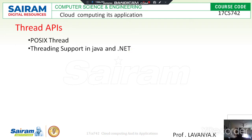Now I will move on to thread APIs. Thread APIs — application program interfaces for threads — are what we use for developing applications. The first is POSIX thread and the second is threading support in Java as well as .NET. Thread APIs are required to support multi-threading for various operating systems and specific programming languages, and to identify the minimum set of instructions commonly available across all platforms.